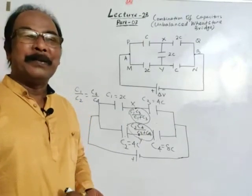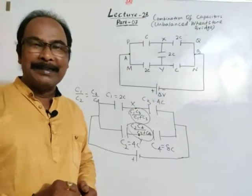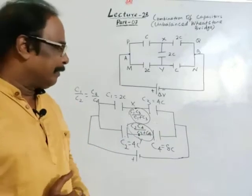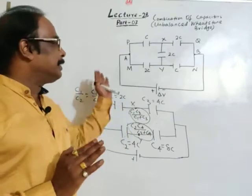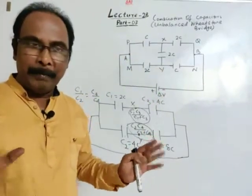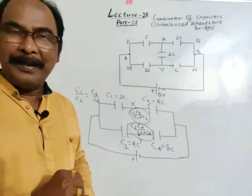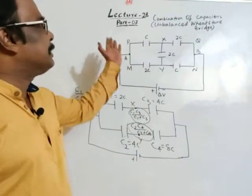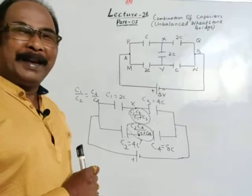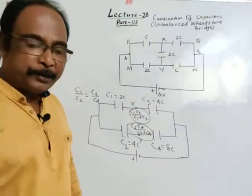In this lecture, we will discuss how to find equivalent capacitance in case of combination of capacitors when there is an unbalanced Wheatstone's bridge — a combination of five capacitors where the balance condition is not satisfied.